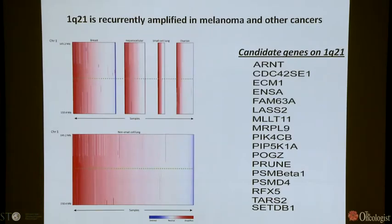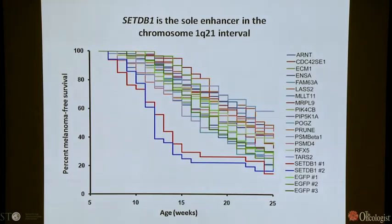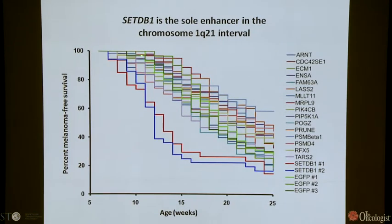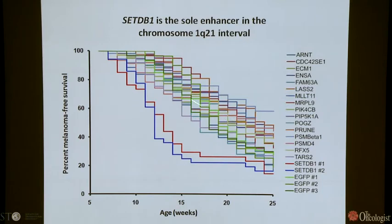They went back to their list of candidate genes and began interrogating all of them. Over the course of this experiment, they generated about 3,000 transgenic animals — one of the advantages of the fish is that 3,000 is not intolerable to generate. On two separate occasions, really only one gene accelerated tumor onset: the histone methyltransferase SETDB1. Those animals got tumors much sooner and with much higher penetrance compared to either GFP or all other genes in the interval, really pulling out the relevant likely driver gene.